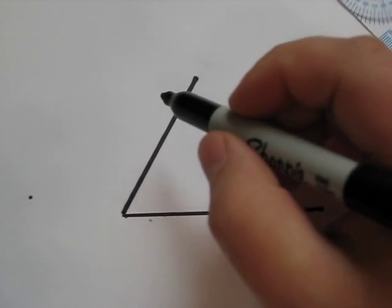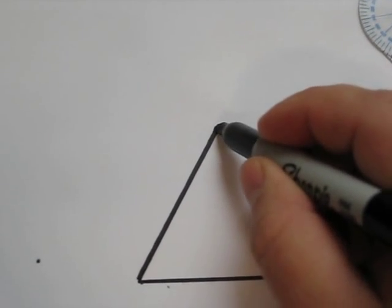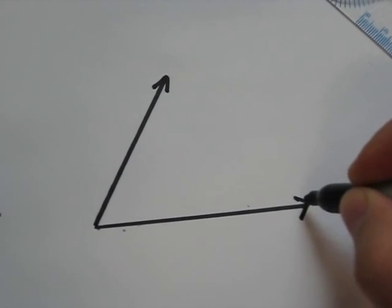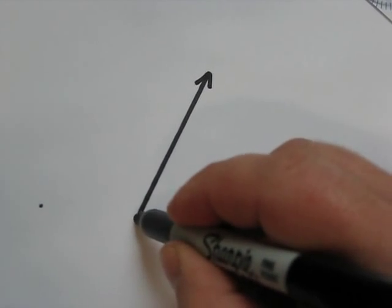I can label the angle any way that I would like. I better draw arrows here showing that those are rays. And this is the vertex of my angle.